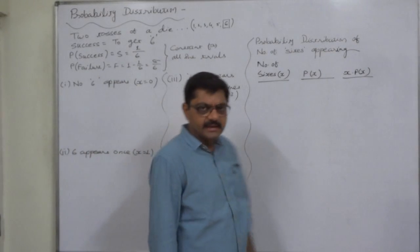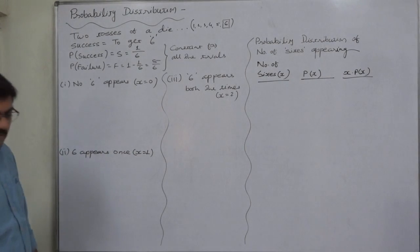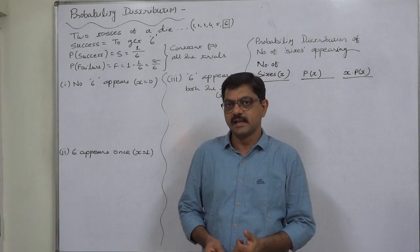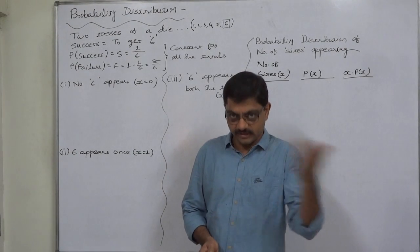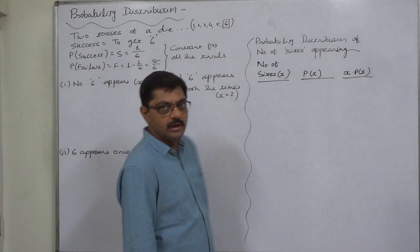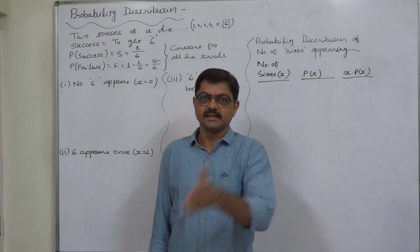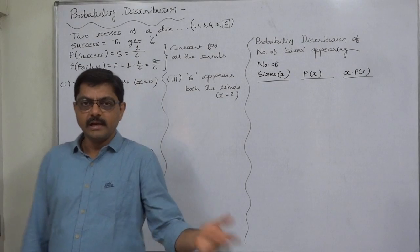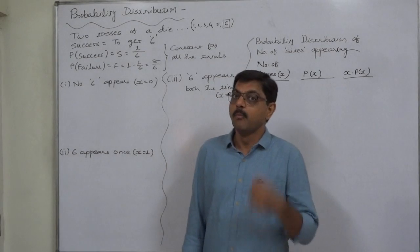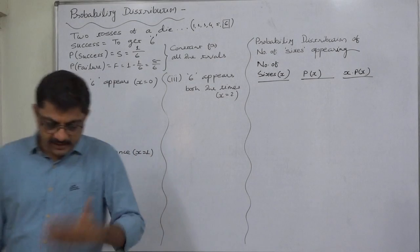Now, targeting getting a six, what is possible when we toss a die two times? The first possibility is no six appears — failure in the first trial and failure in the second. Another is six appears only once — either success then failure, or failure then success. The third possibility is six appears in both trials — success in the first and success in the second.